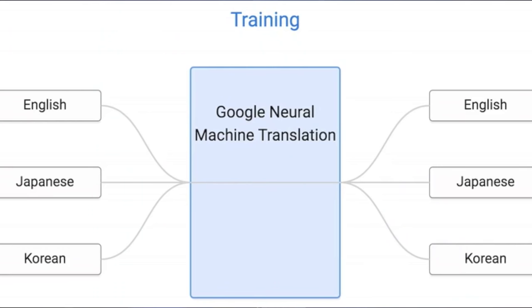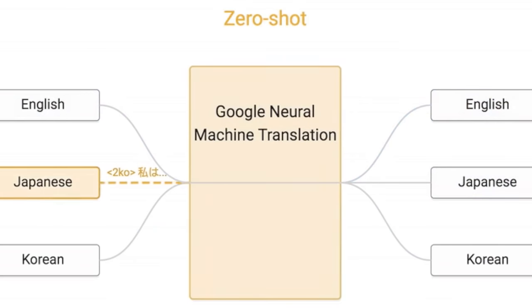It doesn't memorize phrase-to-phrase translations. Instead, it encodes the semantics of the sentence. This encoding is generalized, so it can even translate between a language pair like Japanese and Korean that it hasn't explicitly seen before.